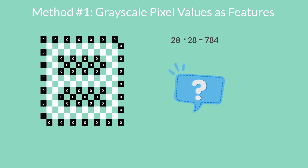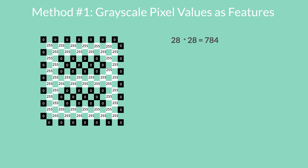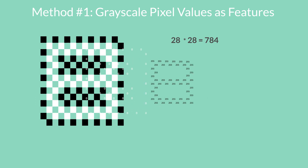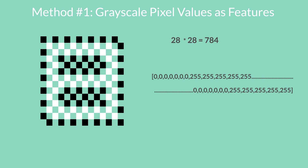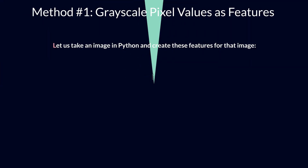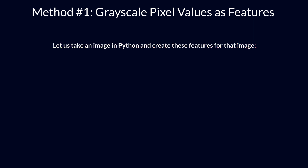Now here's another curious question: how do we arrange these 784 pixels as features? Well, we can simply append every pixel value one after the other to generate a feature vector. Let us take an image in Python and create these features for that image.